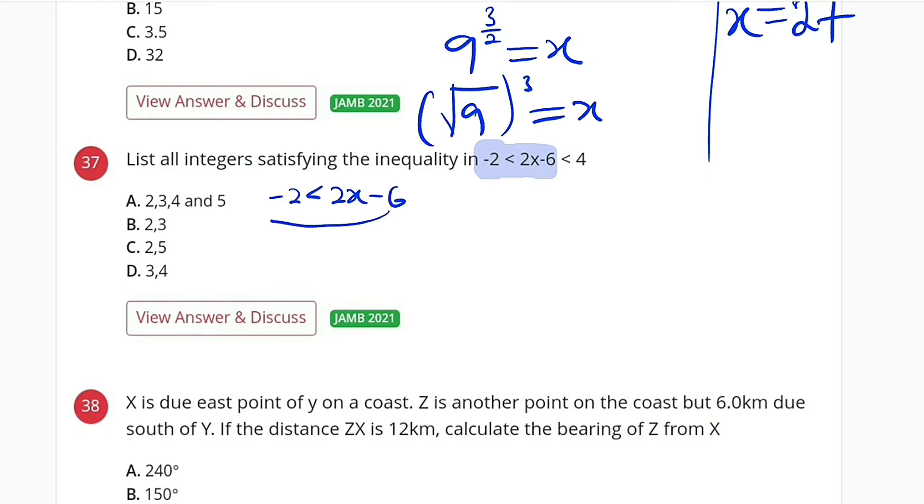So we solve this first. I can bring this one back. It becomes 6 - 2 < 2x. 6 minus 2 is 4, so we have 4 < 2x. We divide both sides by 2. 4 divided by 2 is 2.